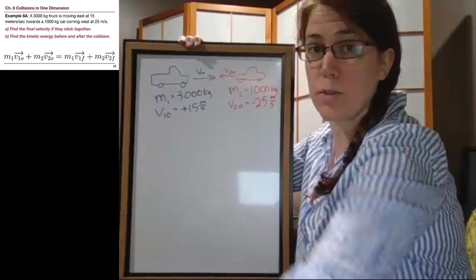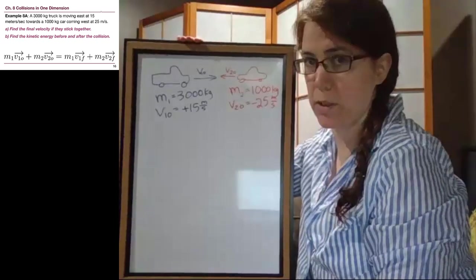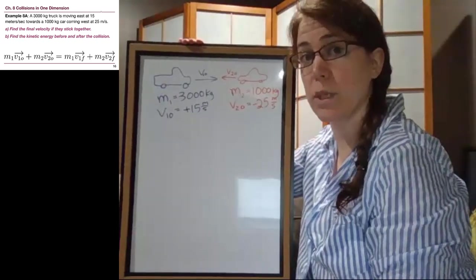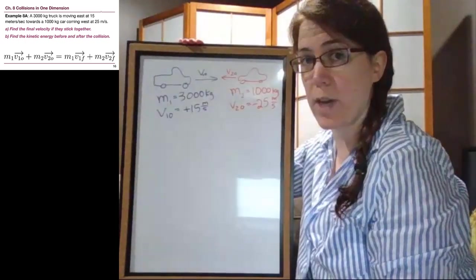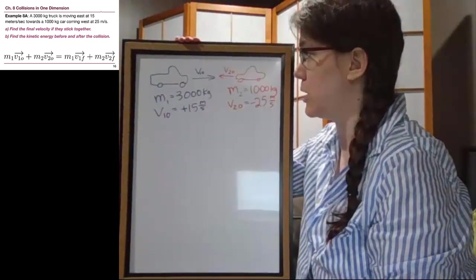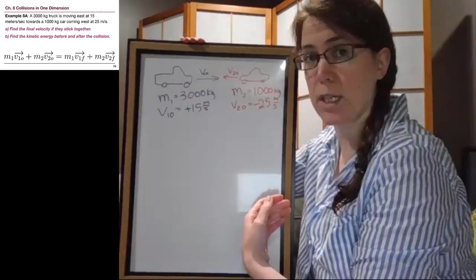Out of all the things that show up in chapter 8, the majority of points missed in a typical assignment or quiz or test tend to be because we forget that velocity is a vector and it needs to have plus and minus signs consistent with the situation. If two objects are moving in the same direction, they can have the same sign as each other.